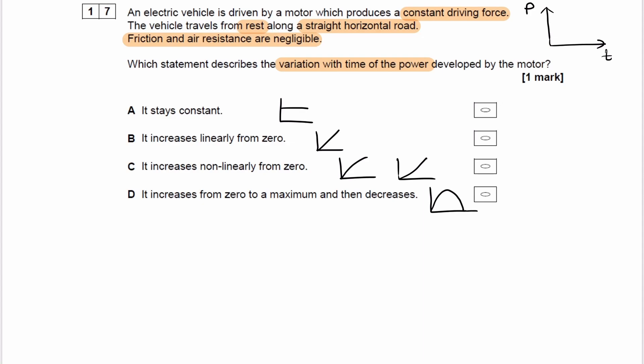We have to get some kind of equation that relates in the end power with time. We're told there's a constant driving force. So we could start with power is equal to force times velocity. We know the force is constant. The velocity may be changing. Let's have a think about whether that would be the case or not.